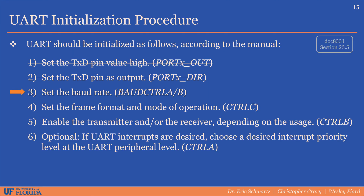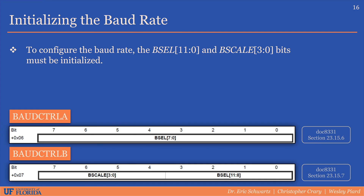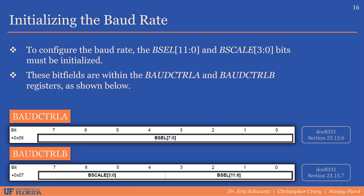After we've initialized the transmit pin, we can set the baud rate using the baud control A and B registers. To configure the baud rate, the baud select and the baud scale bitfields must be initialized. These bitfields are within the baud control A and baud control B registers. Note that the lower 8 bits of the baud select value are in baud control A, and the upper 4 bits are in baud control B.